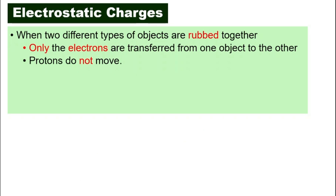When two different types of objects rub together, there is friction between them. Electrons can move from one object to the other — only electrons can move. When the two objects are rubbed together, electrons can jump from one place to another. Protons will always stay where they are; protons do not move. That is very important.